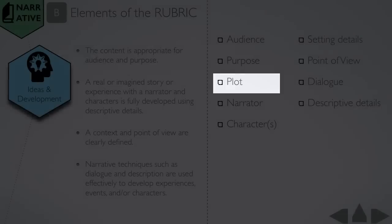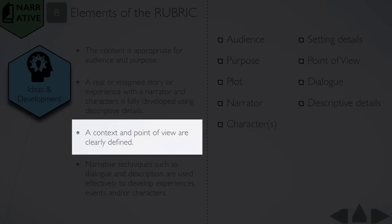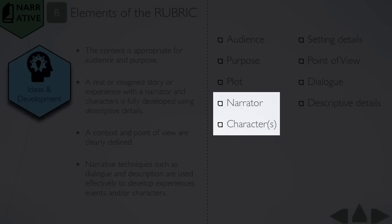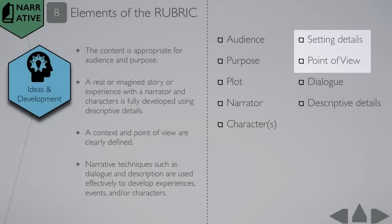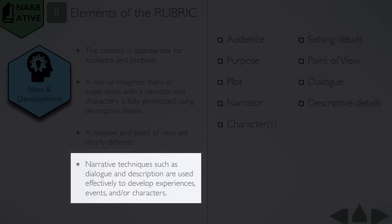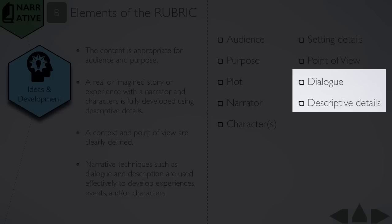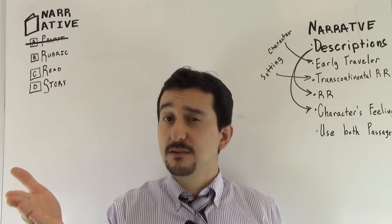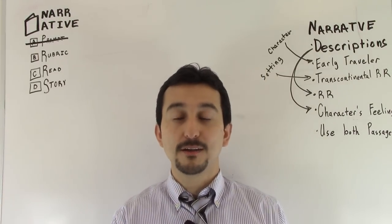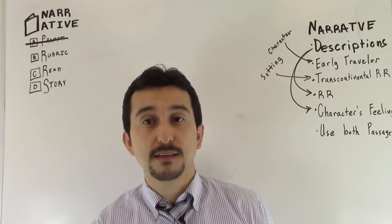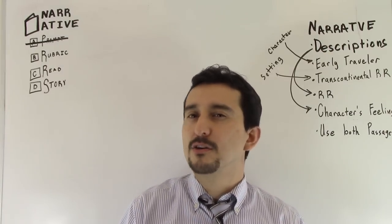A real or imagined story or experience with a narrator and characters is fully developed using descriptive details. Well, we can condense that down and say, hey, you got to have a plot. A context and point of view are clearly defined. So that really happens through our narrator and characters. They really help build not only the setting but the point of view. They help establish that when we have strong narrators and characters written in our story. And then, of course, narrative techniques such as dialogue and description are used effectively to develop experiences advancing their characters. Now it's not limited to dialogue and descriptions, but that's what we're going to kind of pinpoint. That was specifically mentioned, so we should probably have dialogue included somewhere in our response as well as all the other narrative techniques that you can incorporate like internal and external conflict.